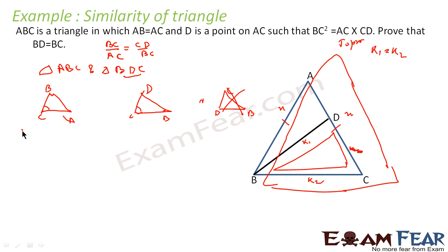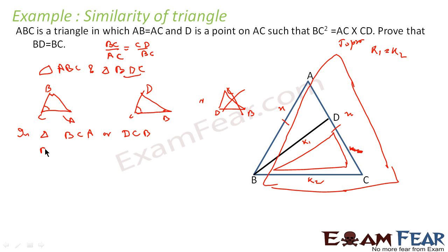So we can see that in triangle BCA and triangle DCB, the sides are proportional and the included angle is common.